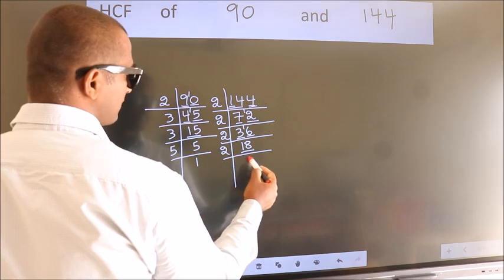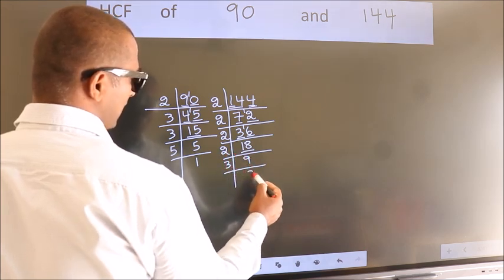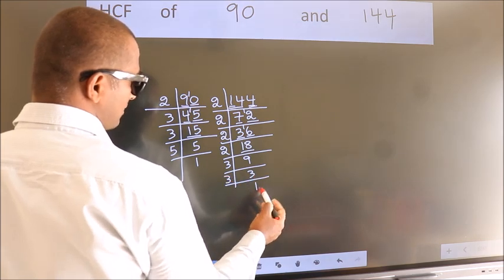Now 18 is 2 nines 18. 9 is 3, 3, 3 is 9. 3 is a prime number, so 3 once 3.